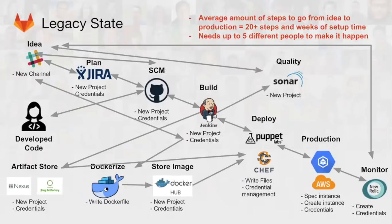This is 20-plus steps to set up, connect, and wire together this brittle architecture. In many organizations this can take a long period of time, involving different people — someone manages JIRA, someone manages source control, someone else manages Jenkins, and someone else manages production environments. We're talking about multiple roles and their shared time and availability just to stand up something new.